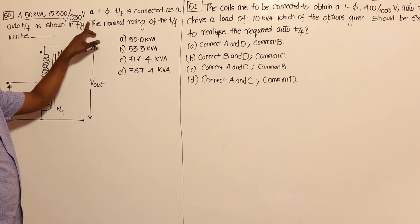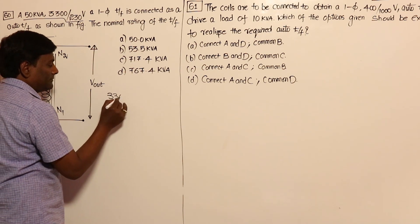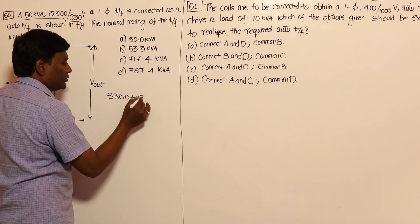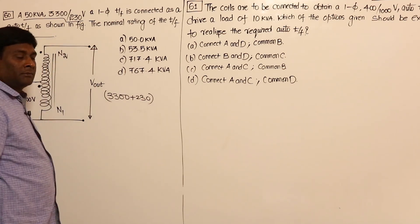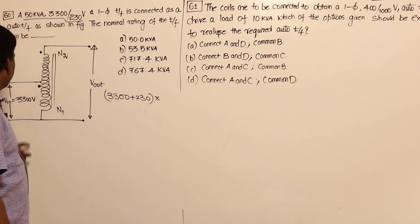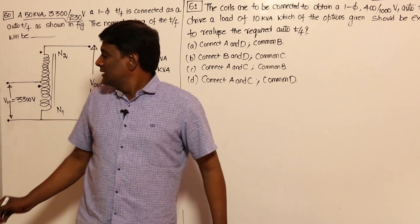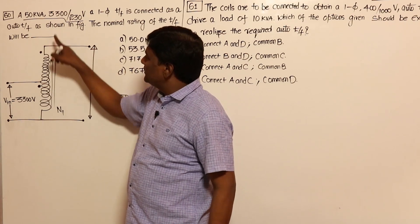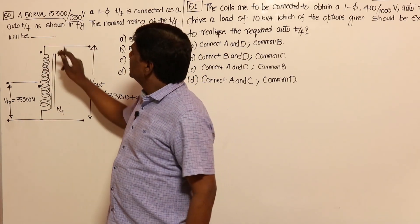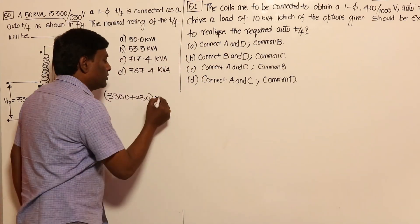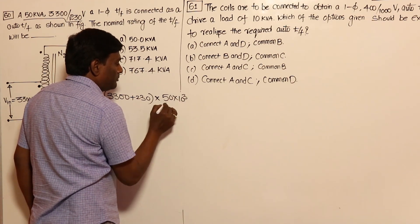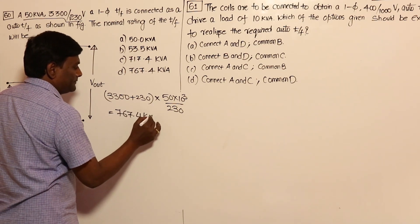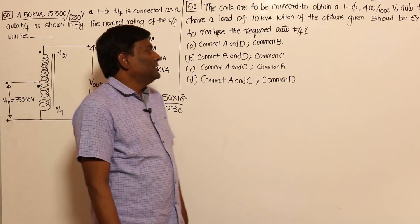For an aiding connection, the output voltage is 3300 plus 230, giving the total additive voltage. The current is 50 kVA divided by 230, which equals 217.4 amperes. Multiplying this out gives the nominal rating of the auto transformer as 767.4 kVA.